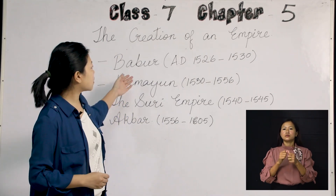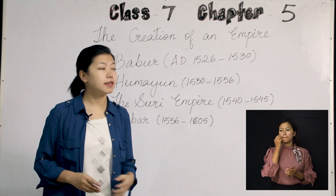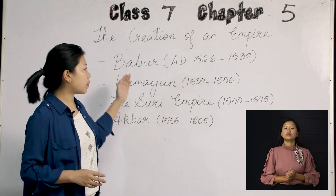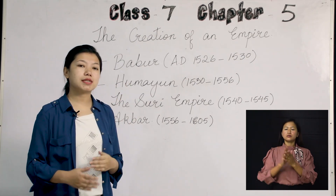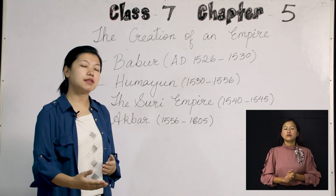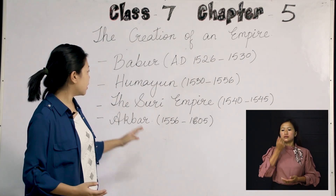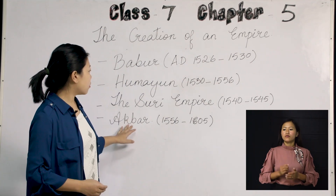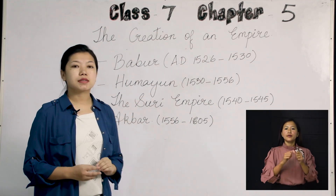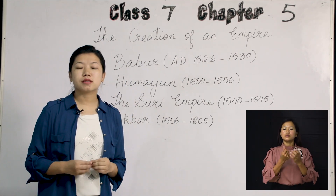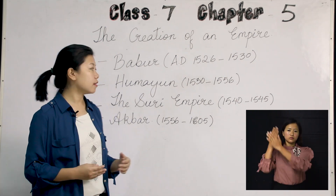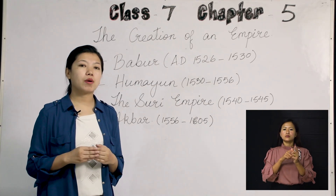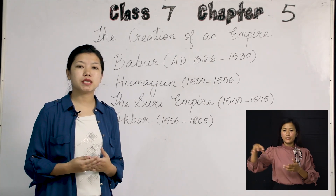The Mughal Empire was started by a man named Babur. After it was started by Babur, it passed on to his generations — to his sons and then to his grandsons, that is Humayun followed by Akbar. This Mughal Empire is considered as one of the greatest empires in the history of India. In the middle, the Suri Empire came, however they ruled only for 15 years.